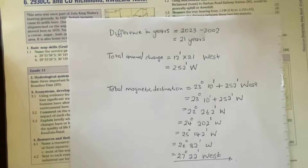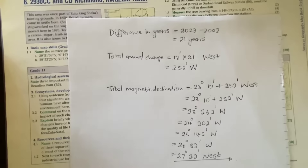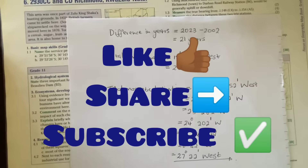I hope you managed to grab something from this calculation of the present magnetic declination of Richmond. Let me know in the comment section what you think, and if you have any questions just type them in the comments. Remember to like, share, and subscribe.